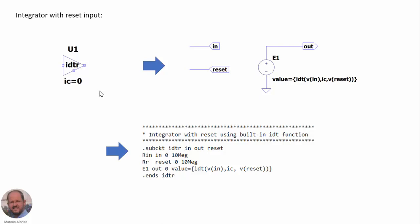Taking advantage of this function IDT, we can also provide an input in our integrator to do the reset of the output to the initial condition at any time. We are using the IDT function applied to the input voltage and we provide here the initial condition. With this other input — the reset input — if this input is zero, the integrator is going to operate normally. But if this input is different from zero, then the output voltage is going to be reset to the initial condition. We are adding also these two resistances to avoid messages in the log file, and with this we have ready this new component for future applications.